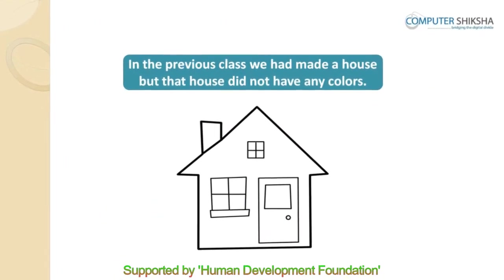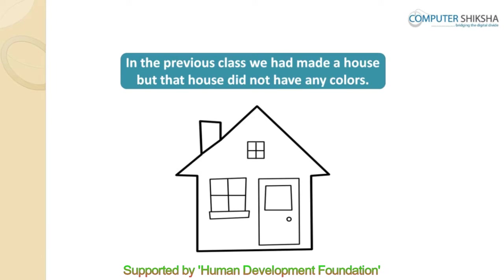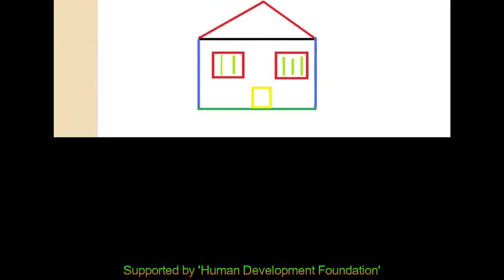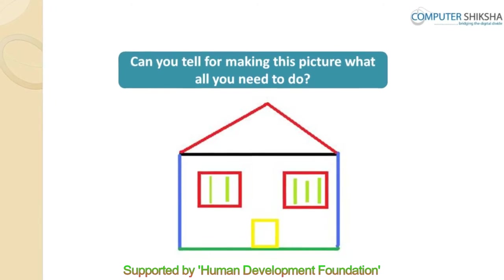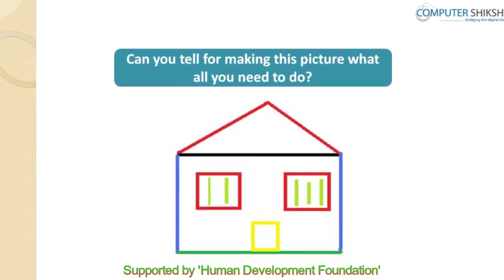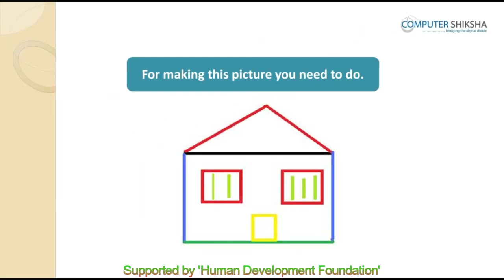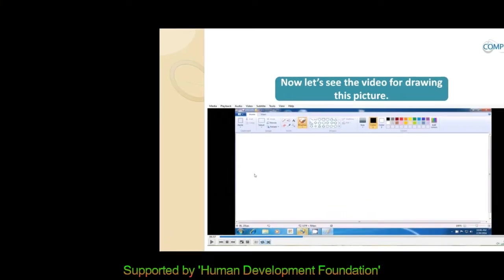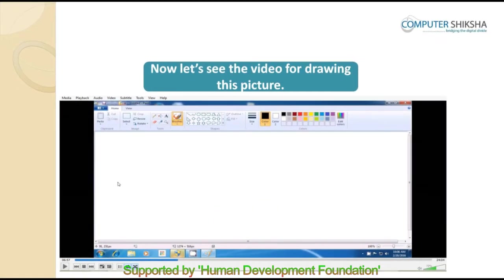In the previous class, we had made a house but that house did not have any colors. Can you tell what all you need to do to make this picture? For drawing this colorful house picture, the line tool, thickness, and color box will be used. You can choose the color that you want. If you can make this picture, then draw it; else watch the video carefully, which will help you learn how to make it.